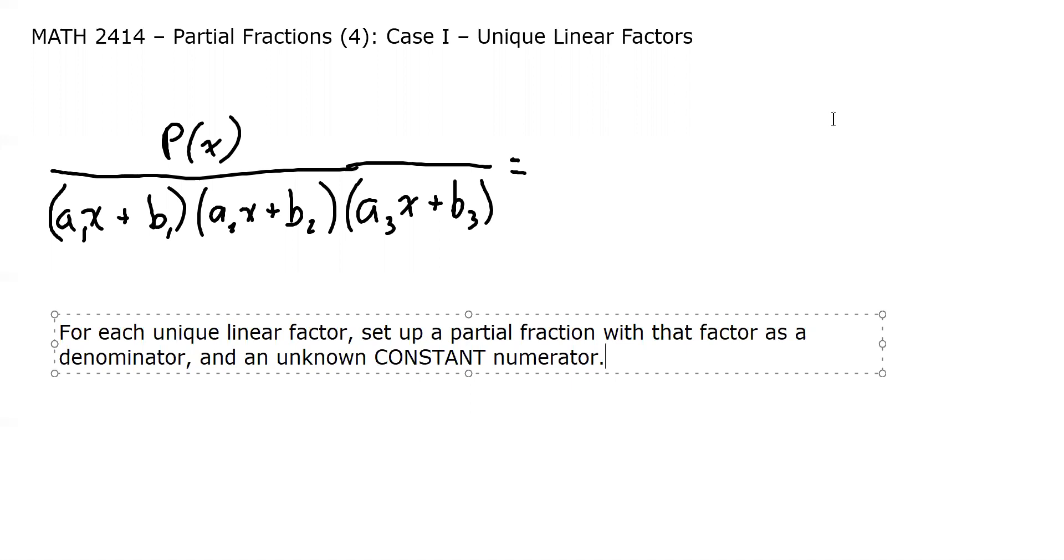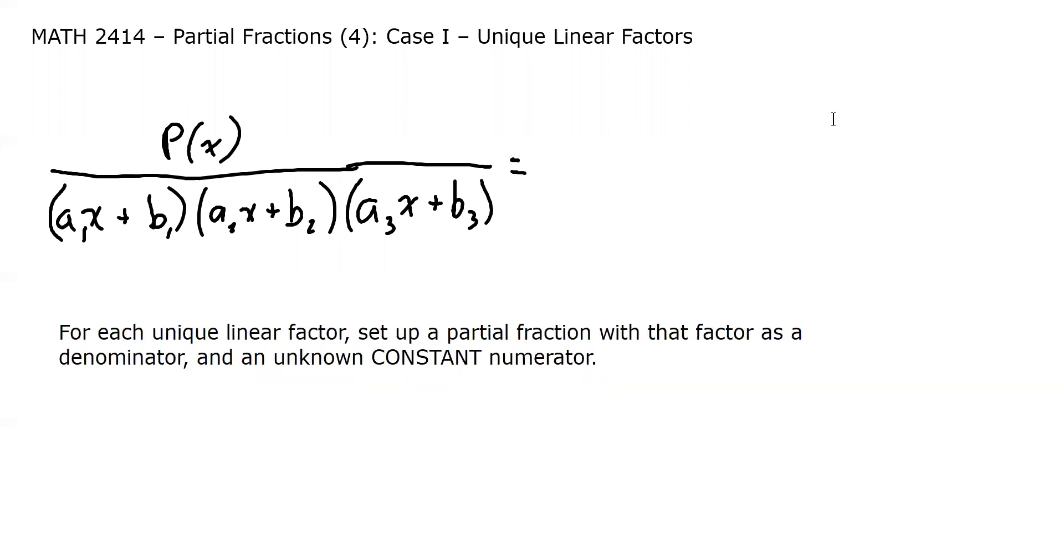So what do I mean by that? What I mean is each of these linear factors in the denominator will get its own fraction. The A1X plus B1 will get its own fraction, the A2X plus B2 will get its own fraction, and the A3X plus B3 would get its own fraction.